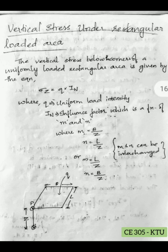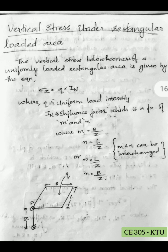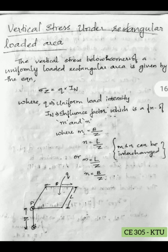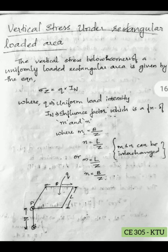M is equal to B divided by Z, and N is equal to L divided by Z. We should know that these values of M and N can be interchanged: M can also be written as L by Z and N as B by Z, where Z is the depth and L and B are the dimensions of the rectangle. Just interchange both values to find M and N.